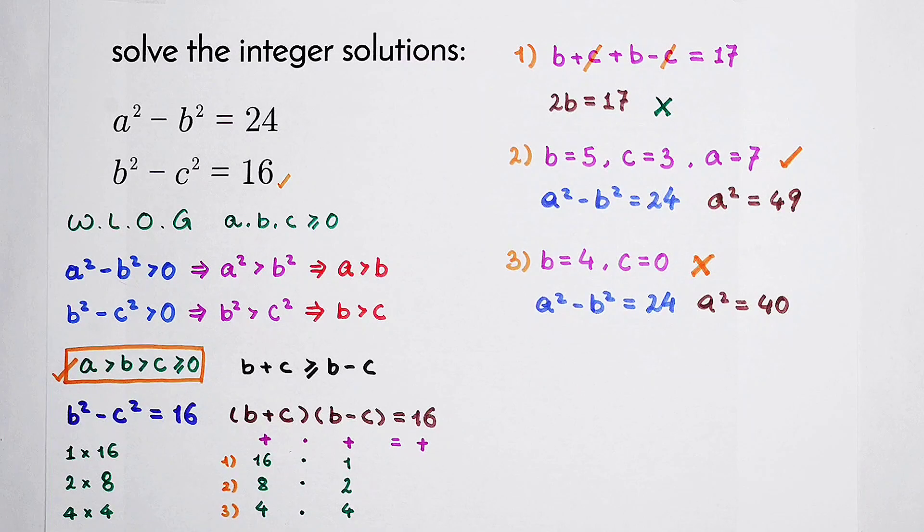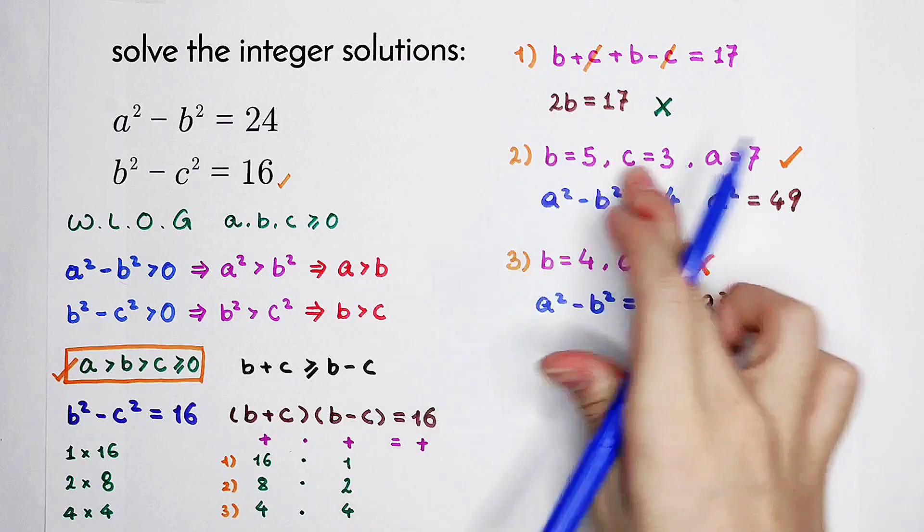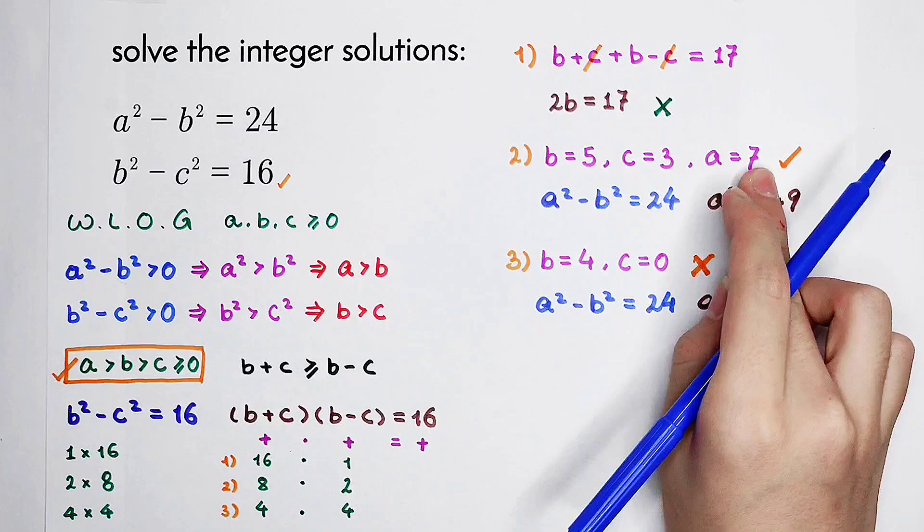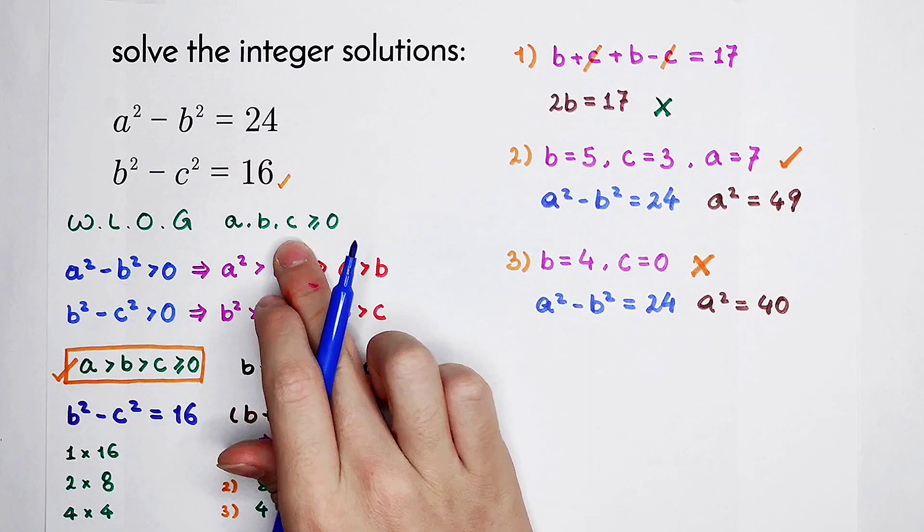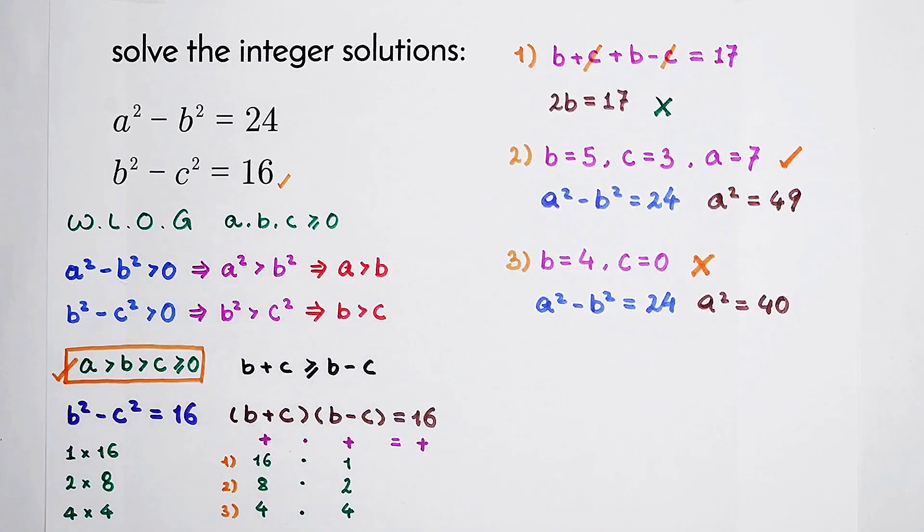So only from the second case we do get the solutions. But we have supposed that a, b, and c are all non-negative integers.